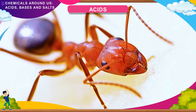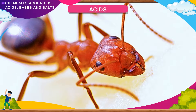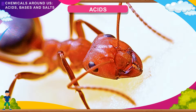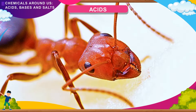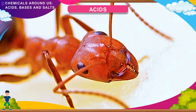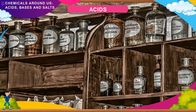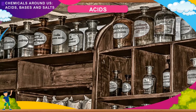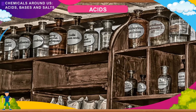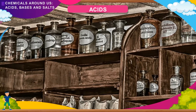Red ants also contain an acid called formic acid. Such acids, which are present in plant and animal matter, are called organic acids. Arrhenius defined an acid as a compound which produces H+ ions only as positive ions in water. There are many acids prepared from minerals in the earth's crust — these are called mineral acids. Common examples are nitric acid, sulfuric acid, and hydrochloric acid.